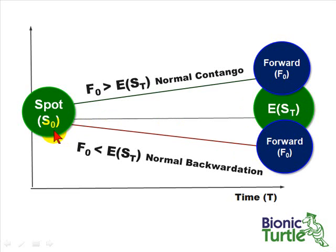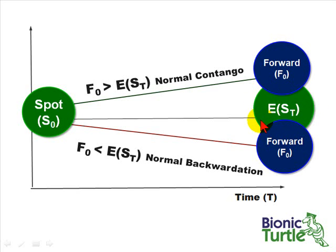The spot price is something we know today — we can buy the commodity for the spot price. However, the market has a consensus view on what the spot price will be at time t in the future. Notice it's t and not zero — there's an expectation about that future spot price. So if this green circle represents the market's consensus expectation on the expected future spot price, then we can talk about the relationship between the forward price and the expected future spot price.